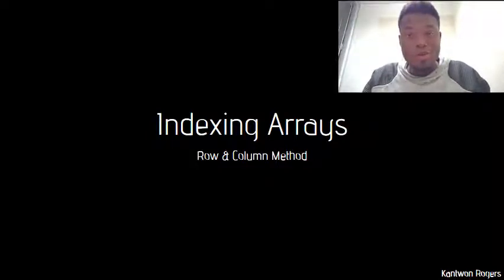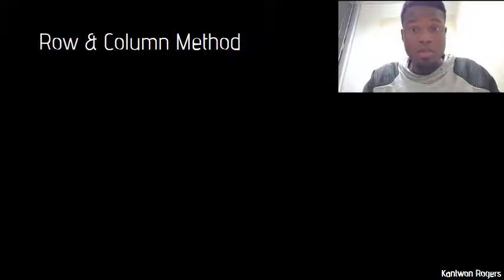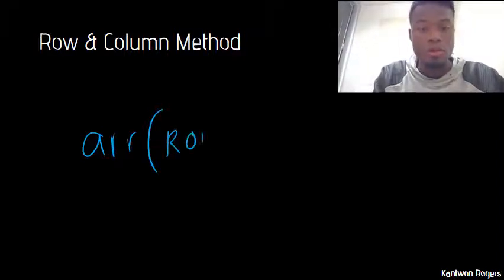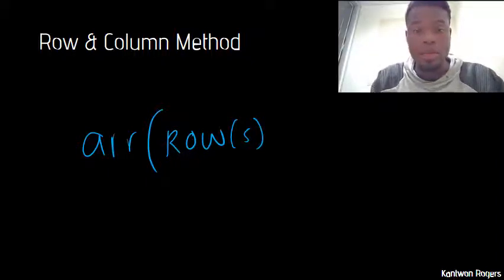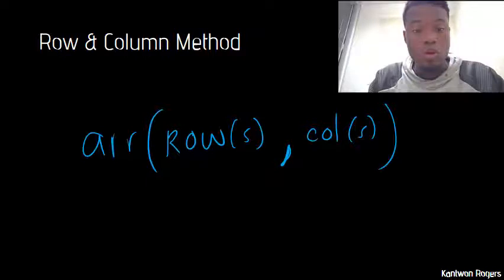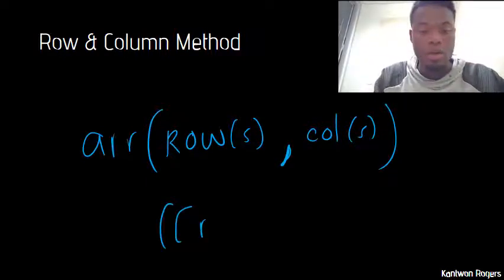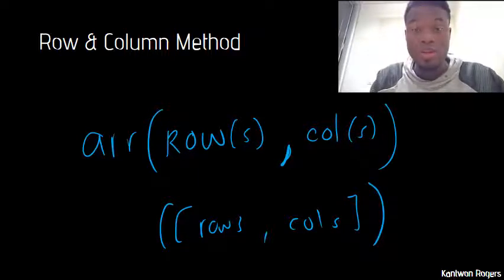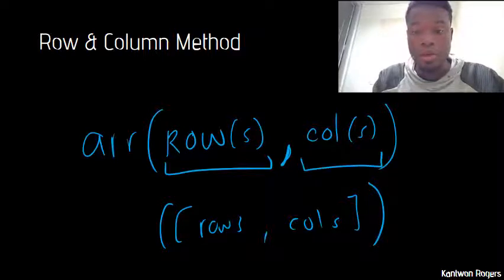In this video we're going to be talking about indexing arrays using the row and column method. Every element in an array has a designated row and column. The syntax is: first the name of the array, then in parentheses the rows we want to index, then a comma, then the columns. Notice we're not encasing this in square brackets — using square brackets would give us a vector of linear indices. Instead, we're designating one input for rows and one for columns.